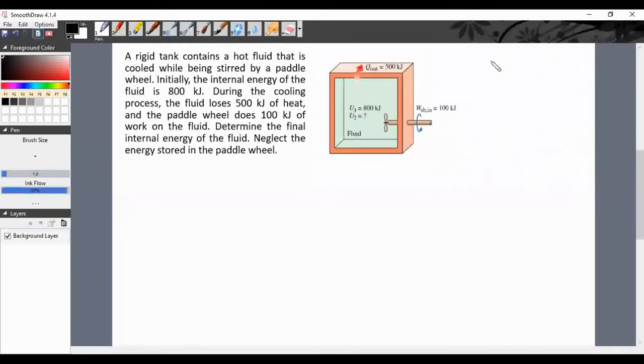A rigid tank contains a hot fluid that is cooled while being stirred by a paddle wheel. Initially, the internal energy of the fluid is 800 kilojoules. During the cooling process, the fluid loses 500 kilojoules of heat and the paddle wheel does 100 kilojoules of work on the fluid. Determine the final internal energy of the fluid. Neglect the energy stored in the paddle wheel.